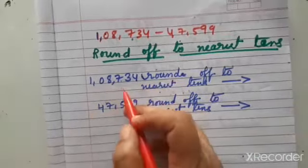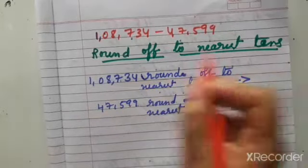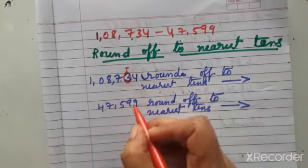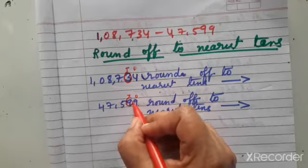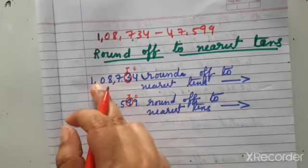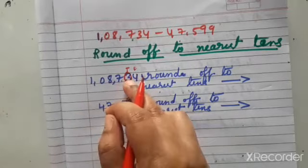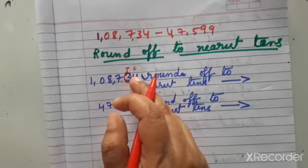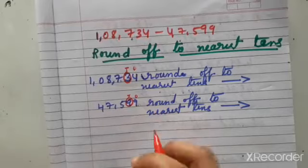One lakh eight thousand seven hundred and thirty four — round off to nearest tens. So, ones and tens: the first step is we have to check the place value. This is the ones and tens place. This number we have to round off to tens place. Now, these numbers before the tens place remain the same. And this number — if once the door is knocked, then the after number will become zero.